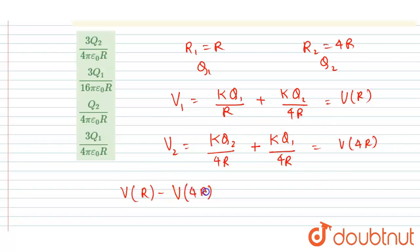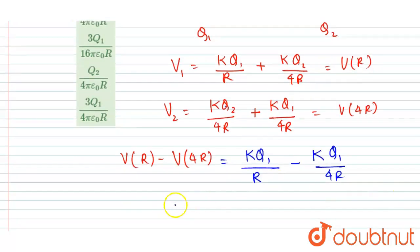Now you can see here this term will get canceled out, k q2 by 4r, right? So I will write k q1 by r minus k q1 by 4r.